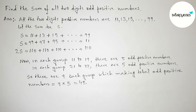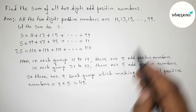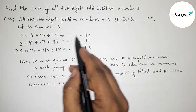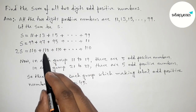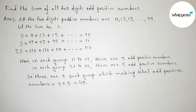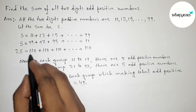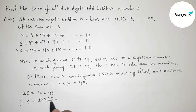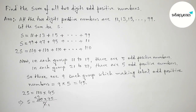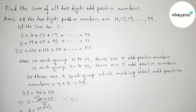Since there are 45 such numbers, we have 2S equals 110 times 45. Simplifying: S equals 110 times 45 divided by 2. Dividing 110 by 2 gives 55, so S equals 55 times 45.